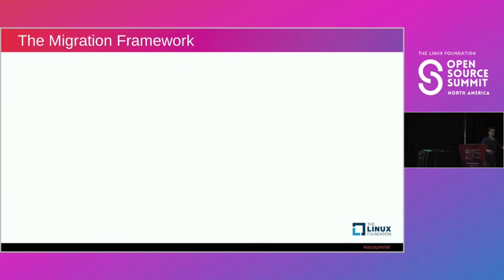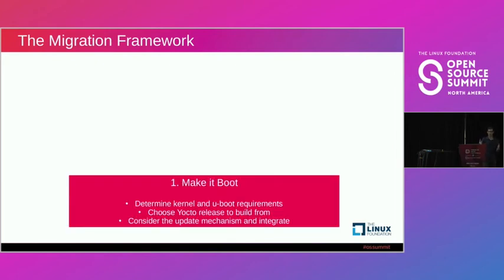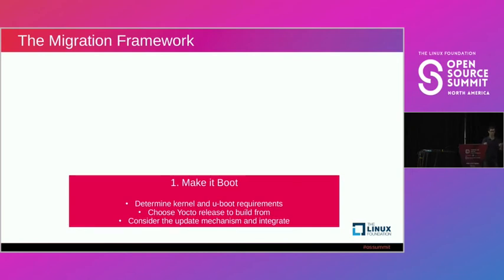So how do you get from Debian to Yocto? The first step is to make your system boot: figure out your hardware requirements and get the system booting. Yocto provides LTS releases, so figure out which release you'll use, determine your kernel and bootloader requirements. At this point you should also start considering your update mechanism. For me I was using RAUC with an over-the-air update utility and an A/B partitioning scheme, which meant doing development at the bootloader layer. You don't need the end-all solution yet, but start thinking about it and make a system that boots.